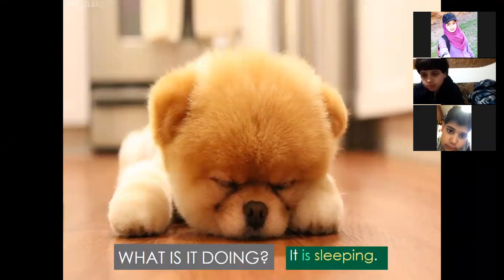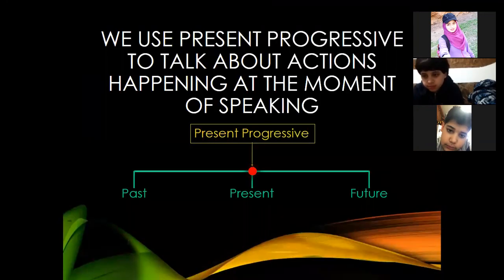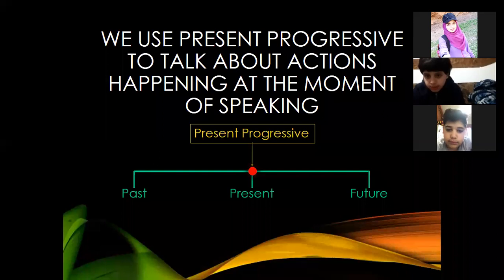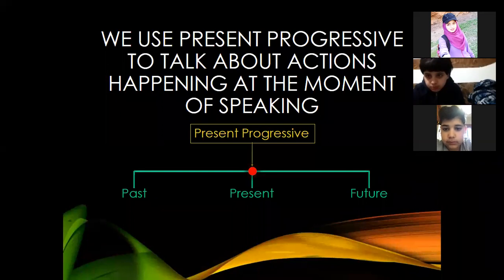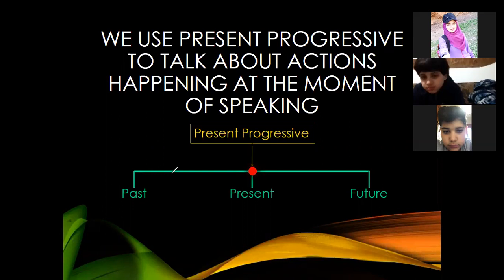It is sleeping. So let us start by talking about the usage of present progressive or present continuous tense. When do we use present continuous tense? When you want to talk about an action that is occurring at the moment of speaking, you use the present progressive tense. If I have this timeline over here —